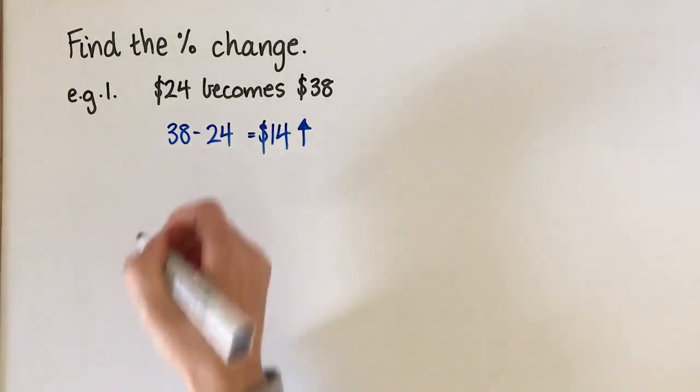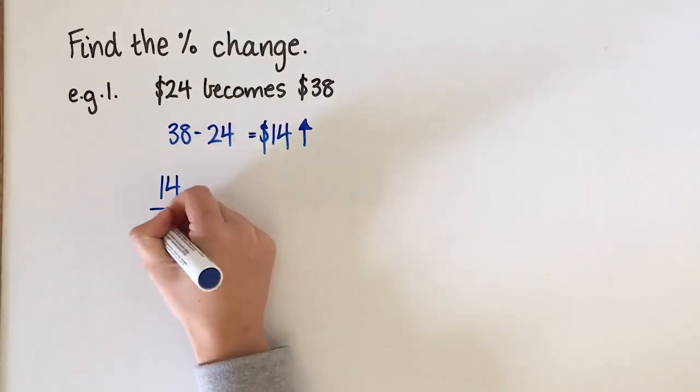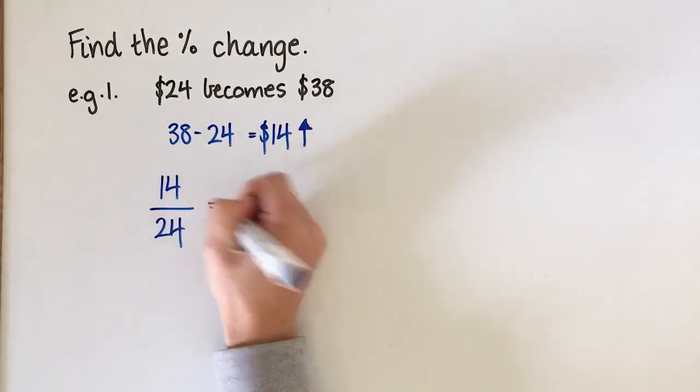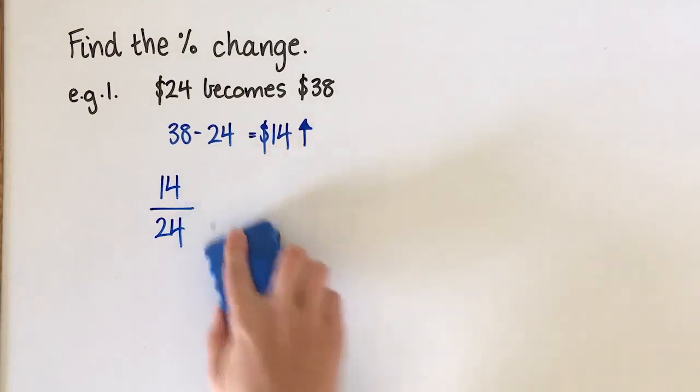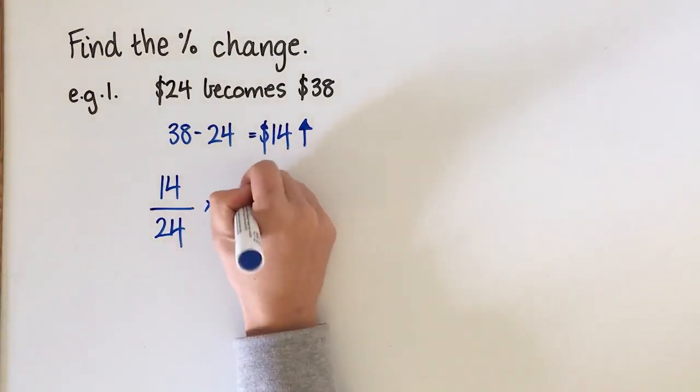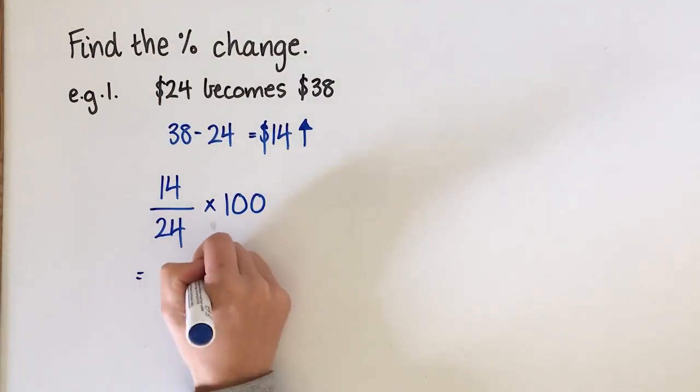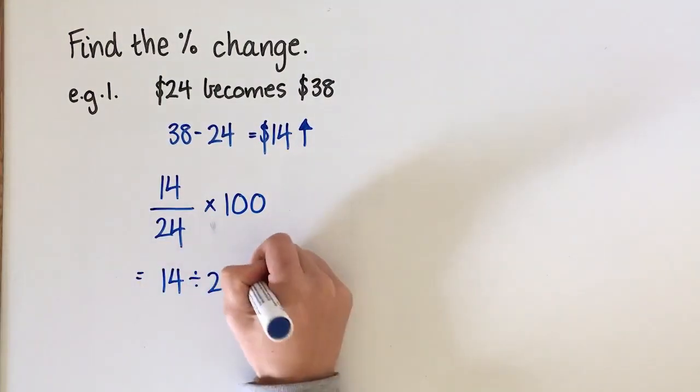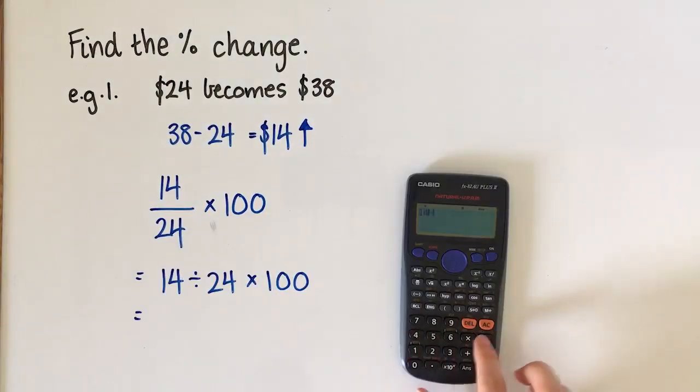So then what we need to do is we're going to get our 14 and we're going to put it over the starting value which was 24 to work out what the percentage change has been. We're going to times it by 100 to make it a percentage. On the calculator I'm going to type 14 divided by 24 times 100.